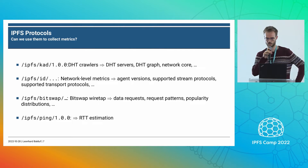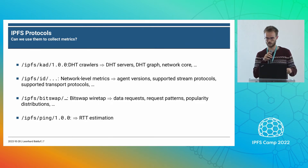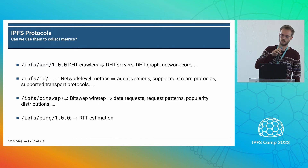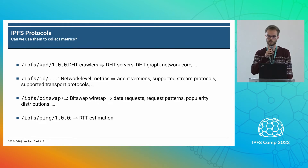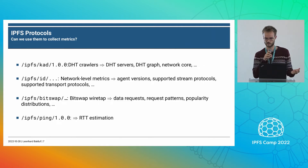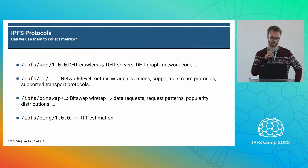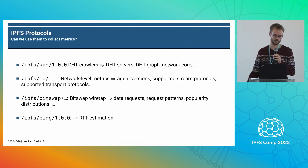There's the Kademlia protocol which does DHT stuff — there are DHT crawlers using this to find DHT servers on the network, infer the graph of DHT servers, and infer the network core. The ID protocol gives us agent versions, supported stream protocols, transport protocols, and more. Bitswap lets us collect requests and learn about data requests on the network — popularity distributions, request patterns, content analysis. And the ping protocol gives us RTT estimation.